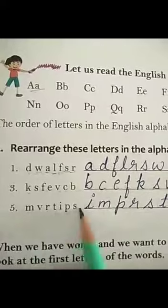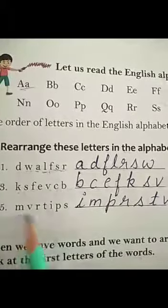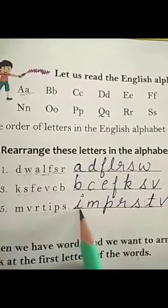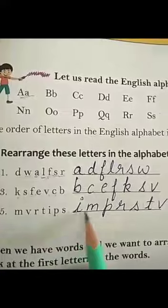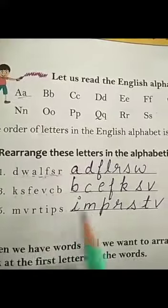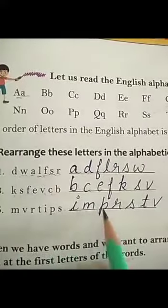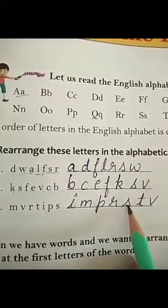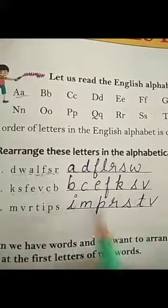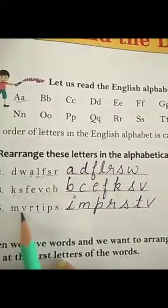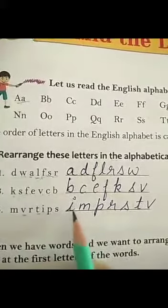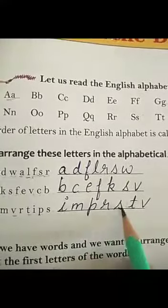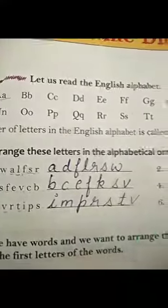Question number five. Now in this, the first letter according to the alphabet is I. The second letter is M. And the third one is P. And next is R. And next is S. And after that T. And last one is V. So the order is now I, M, P, R, S, T, V.